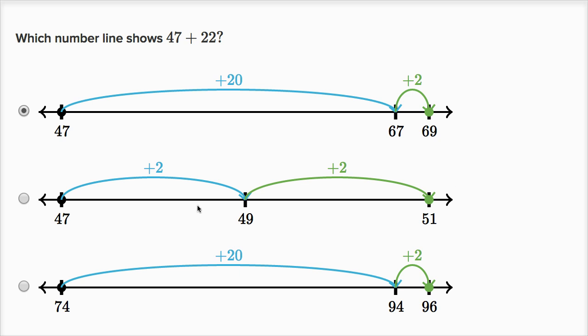So let's see why these choices don't seem right. So this one, we add two to get to 49, and then two more to get to 51. Well, this isn't adding 22, this is adding two plus two, this is adding four.